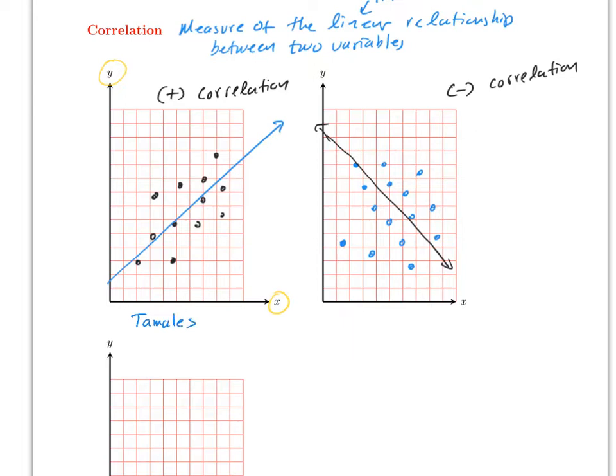A typical example of positive correlation: the number of tamales you eat versus your weight. Notice that a correlation does not necessarily imply that one is causing the other — that is very important.